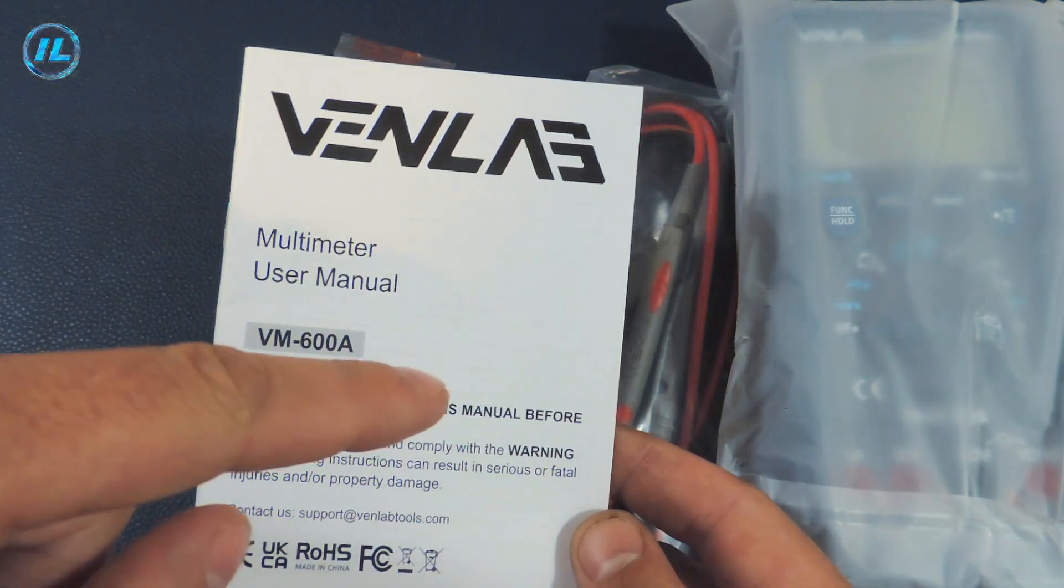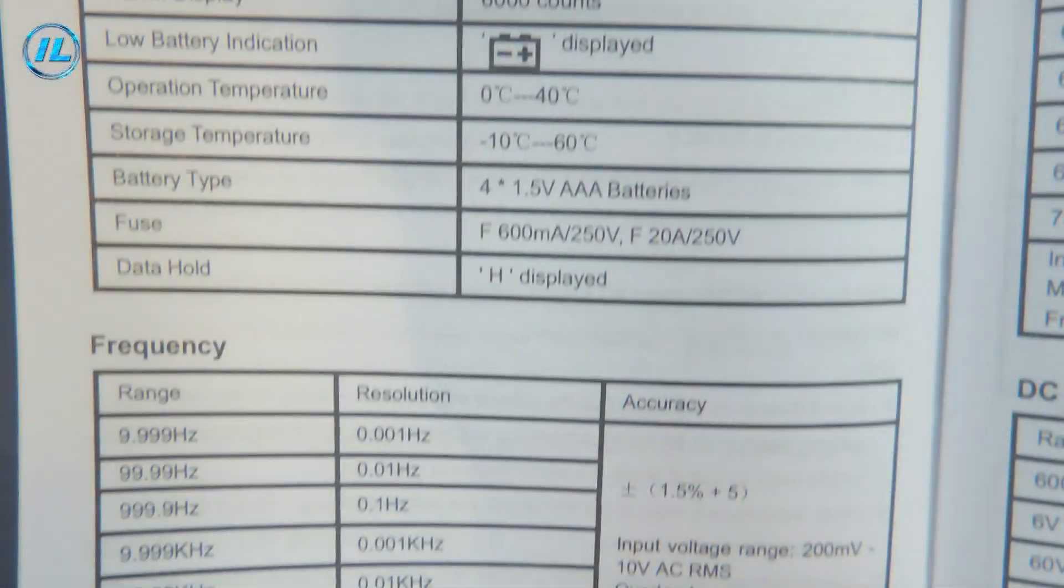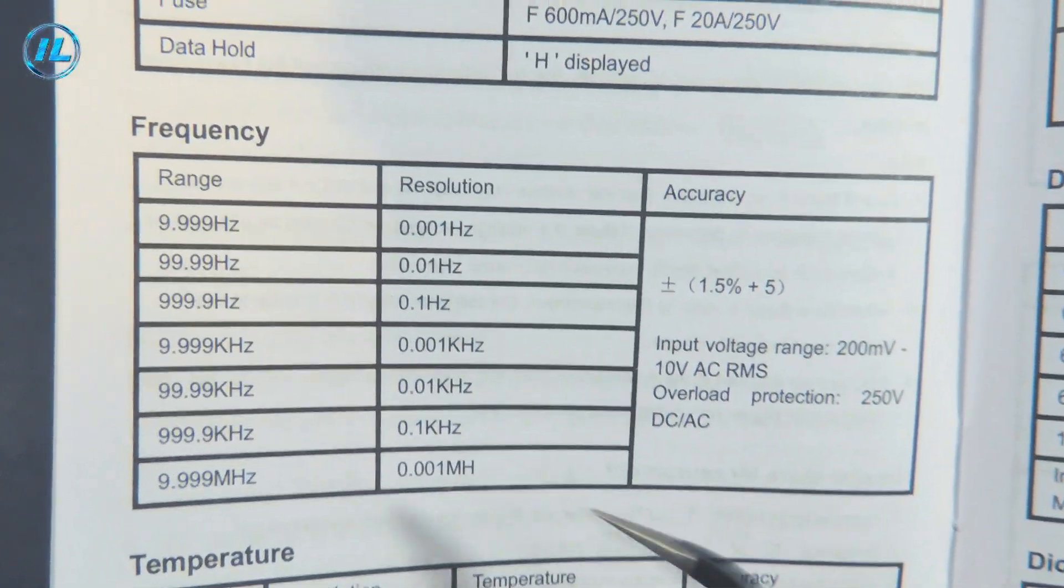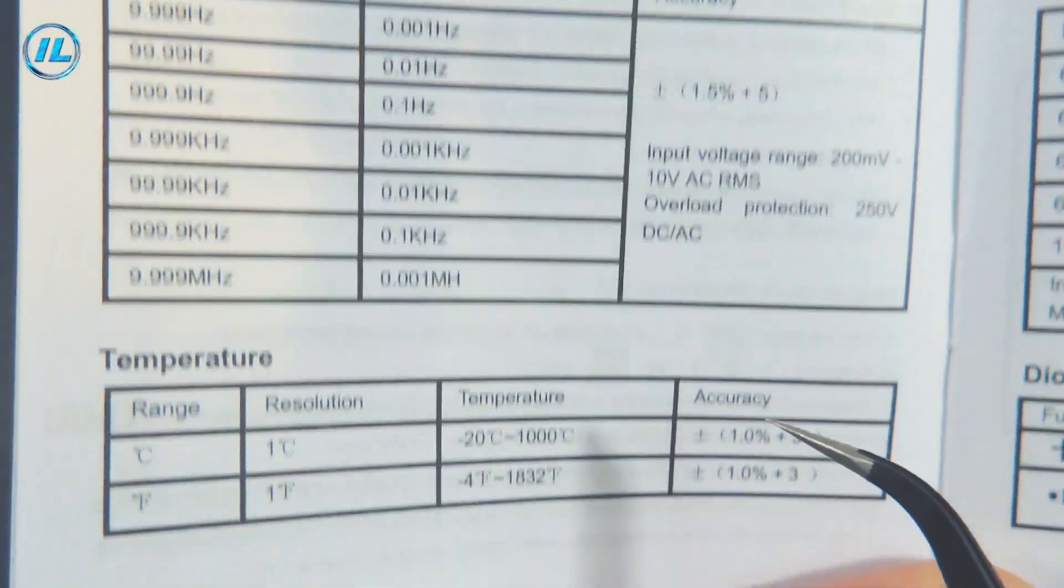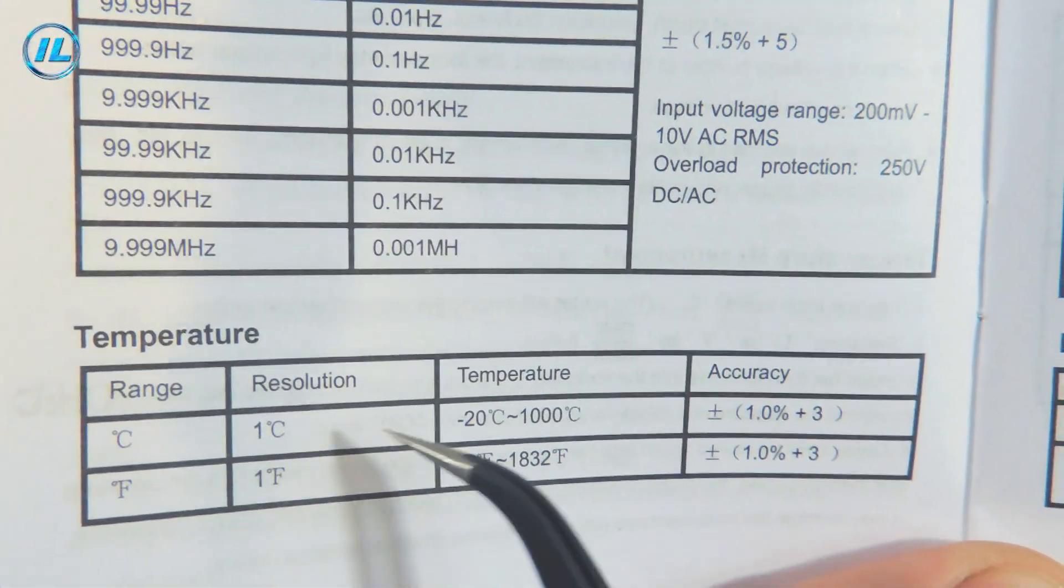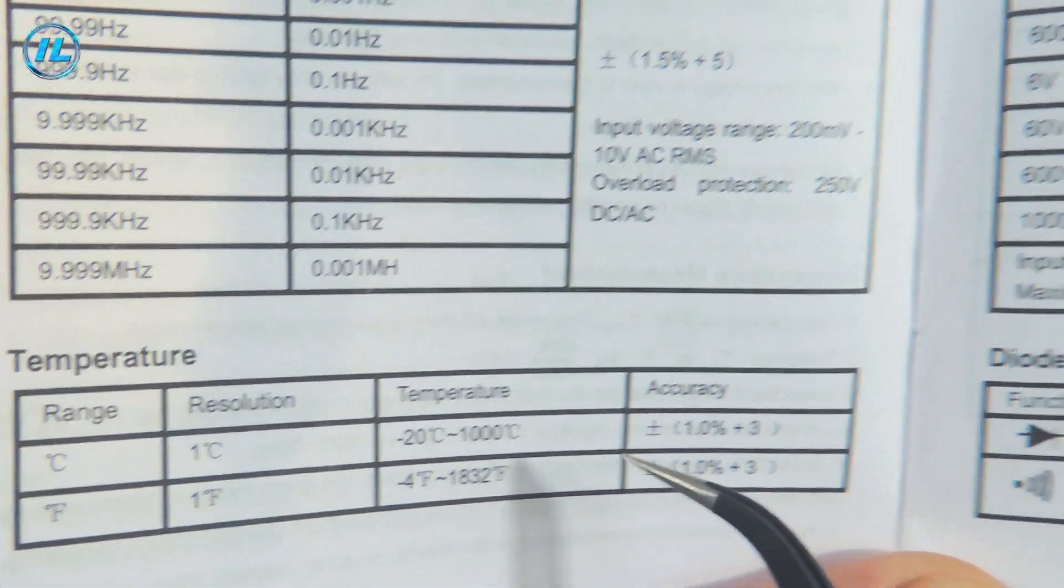Let's look first of all at the parameters of this device. Frequency measurement is up to 10 megahertz with an error of 1.5 percent. Next, the temperature measurement up to 1000 degrees Celsius.